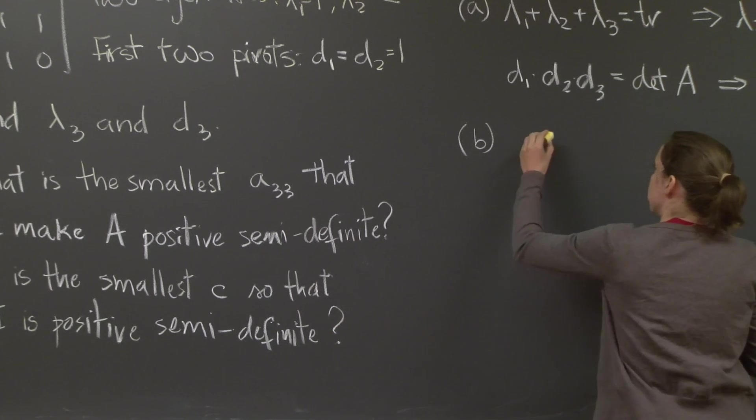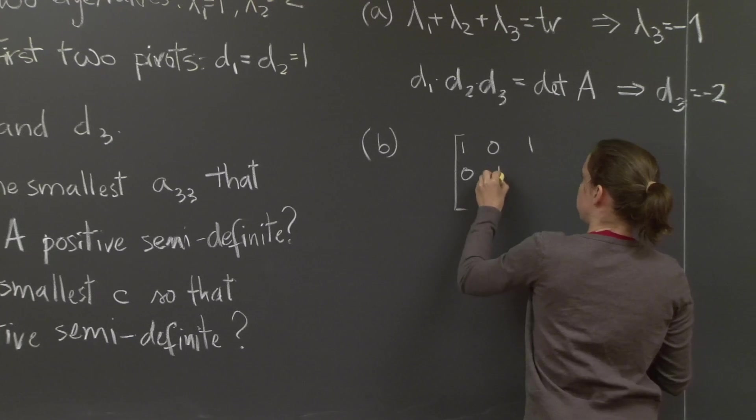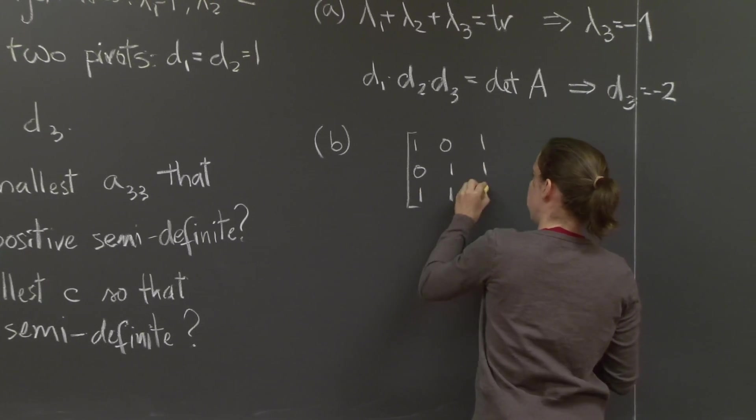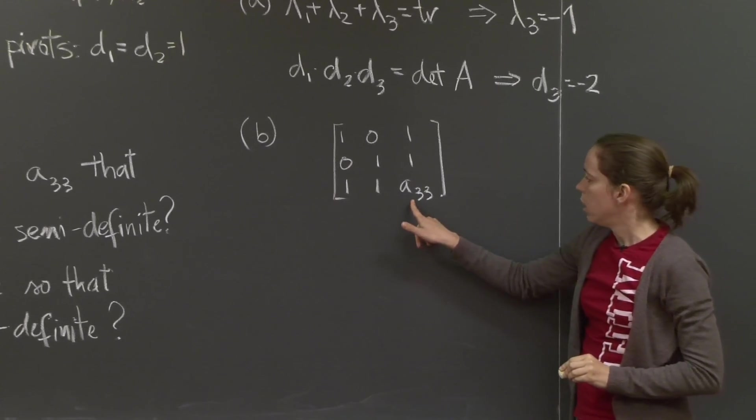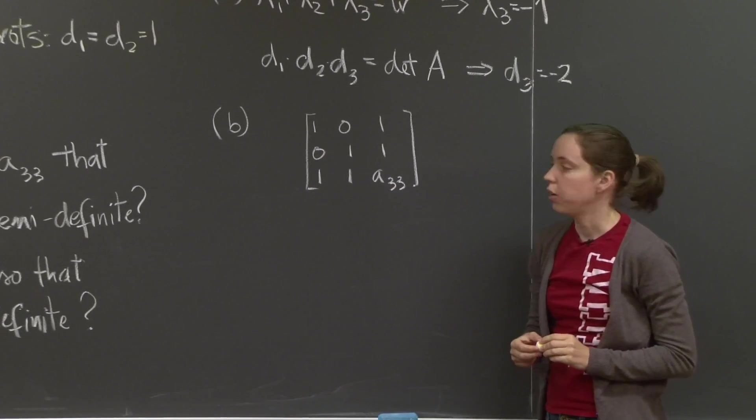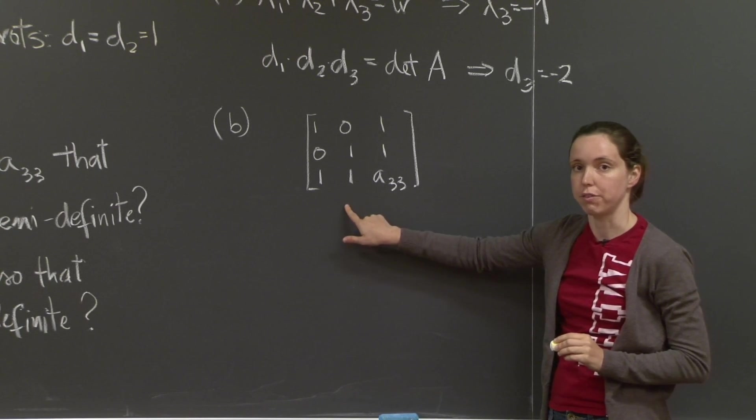So our matrix will be 1, 0, 1, 0, 1, 1, 1, 1, and we're allowed to change this third entry. How do we find, how do we figure out if this matrix is positive semi-definite or not?